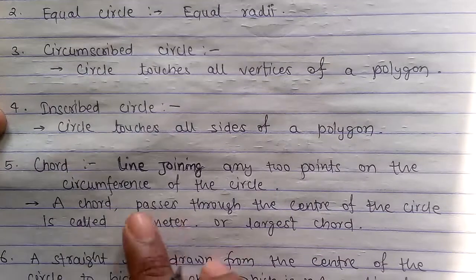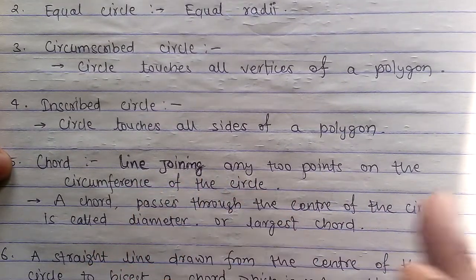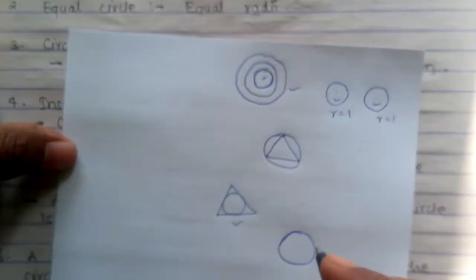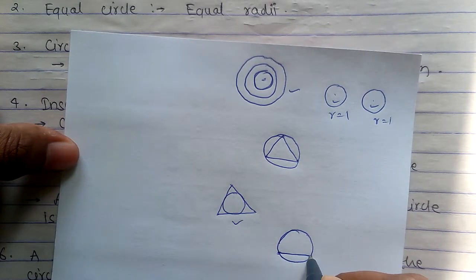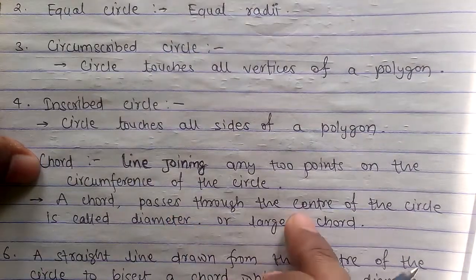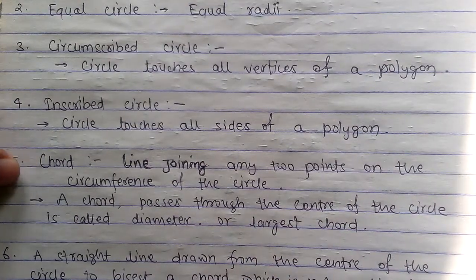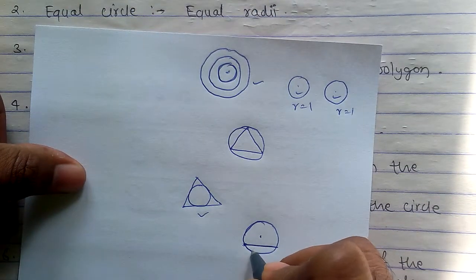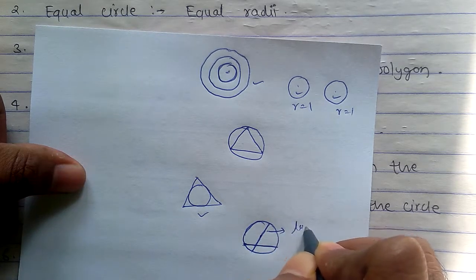Point number five: Chord. Line joining any two points on the circumference of a circle. We have a circle - any two points on the circumference, make a line, this is a chord. And a chord that passes through the center of a circle is called diameter or largest chord.